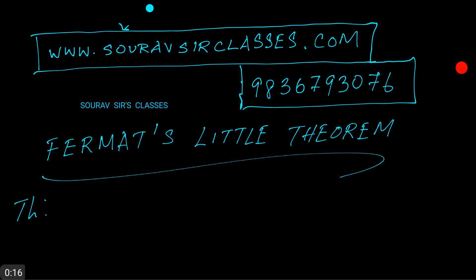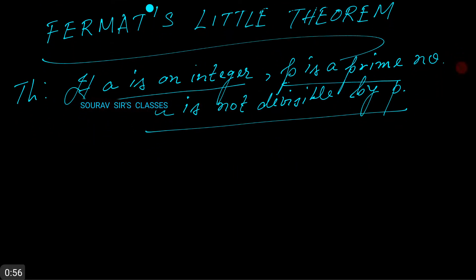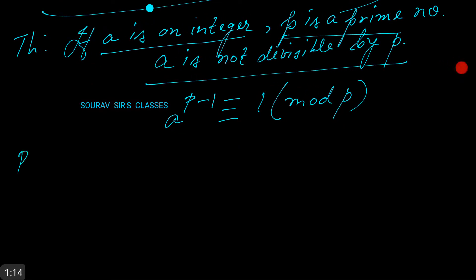The theorem states that if a is an integer and p is a prime number, and a is not divisible by p, then a to the power p minus 1 is congruent to 1 mod p. Pretty simple. So let's get to the proof, which is not so simple. If you want to, you can pause anywhere or rewind the video. The most straightforward way to prove this theorem is to apply induction.